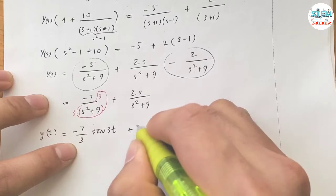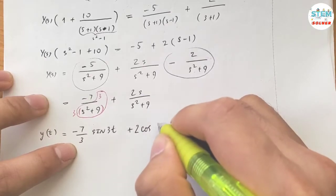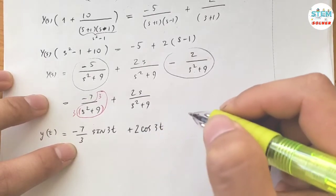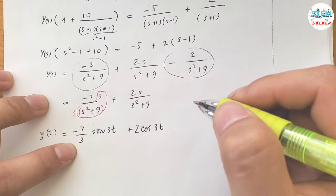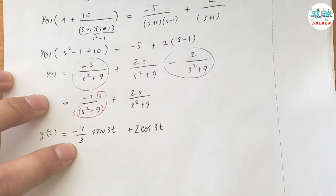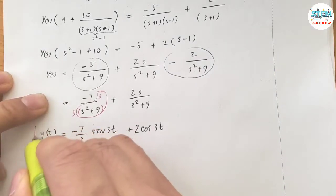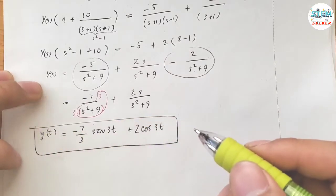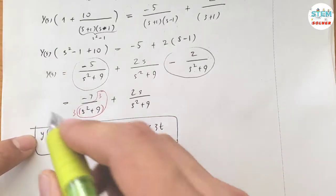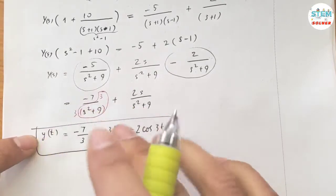So y(t) equals negative 7 over 3 times sin(3t), plus 2·cos(3t). This is the answer for y(t), but we are not done yet because we have to solve for x(t) as well.